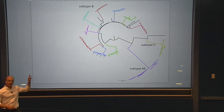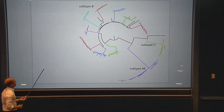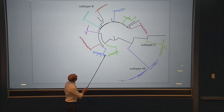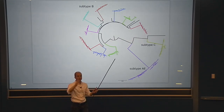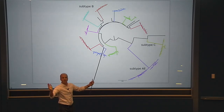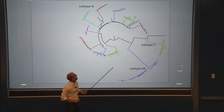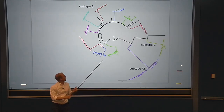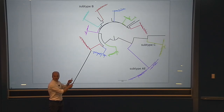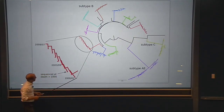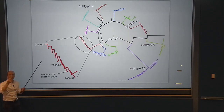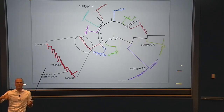Each color is one individual. Somewhere in the center would be the sequence that got transmitted from chimp to humans, which then evolved over time. At some point the individual whose samples we have got infected. In this particular case the first sample is at the start of the millennium, with samples every few months to a year thereafter. From one sample to the next you see little branches corresponding to mutations that accumulated over that time frame.